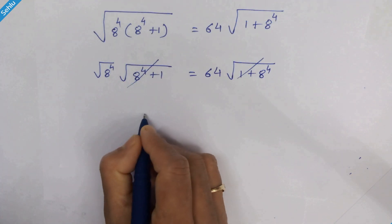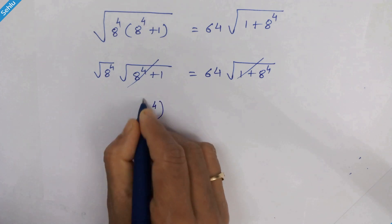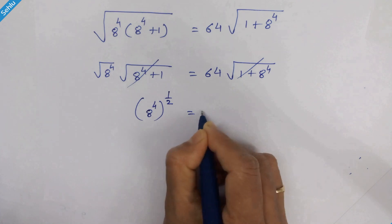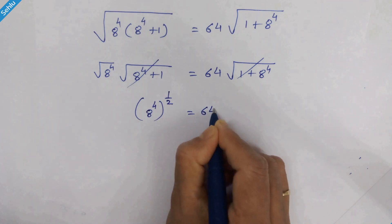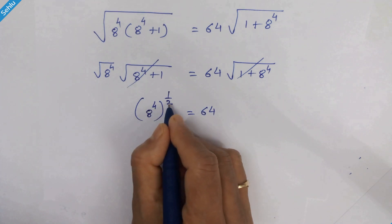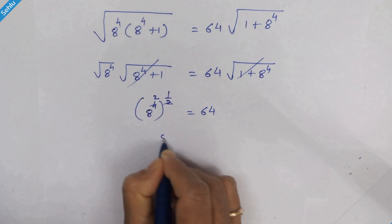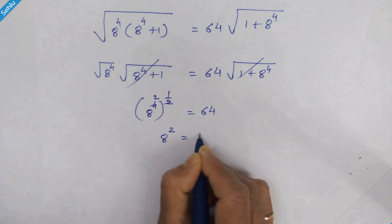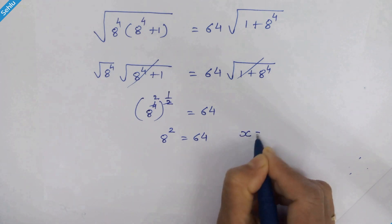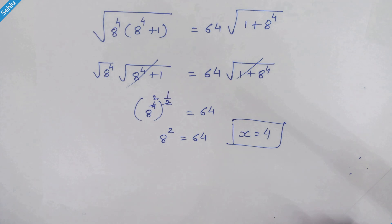This part can be written as 8 raised to 4 whole raised to 1 upon 2, equal to 64. Multiplying the exponents, 2 times 2 gives 4, so we have 8 squared is equal to 64, which is true. Therefore x is equal to 4 is the correct answer.